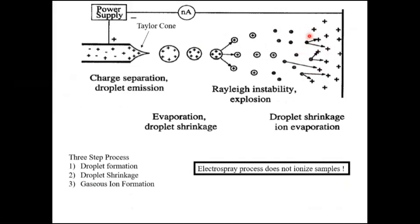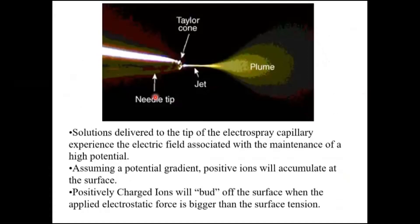After removal of the solvent, the ions form a cloud of gaseous ions. Strictly speaking, electrospray does not ionize the sample directly — it indirectly ionizes it by transferring condensed phase ions into the gaseous phase. This is illustrated by an actual photograph showing the needle tip, a conical formation of liquid called the Taylor cone, followed by a jet, then larger droplets, and finally a cloud of ions.